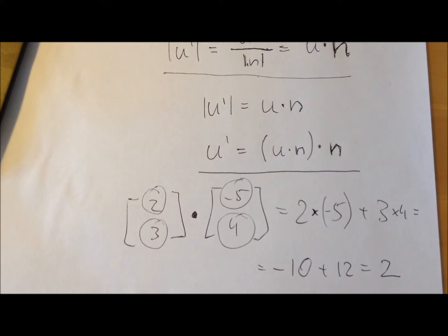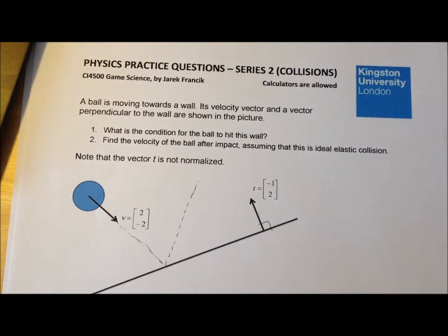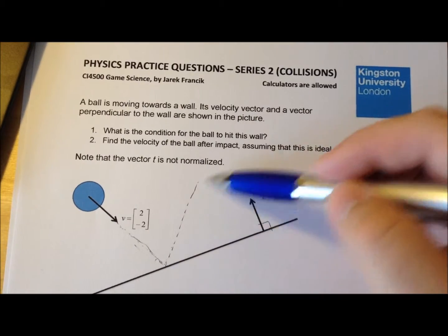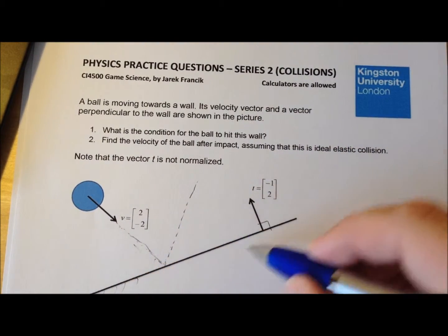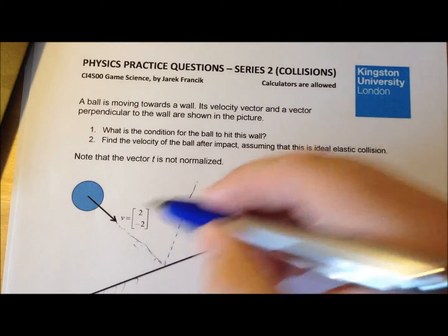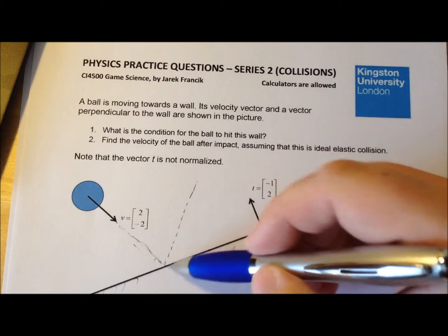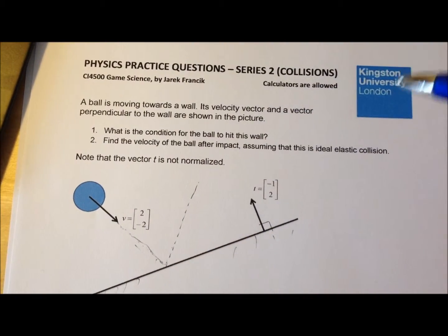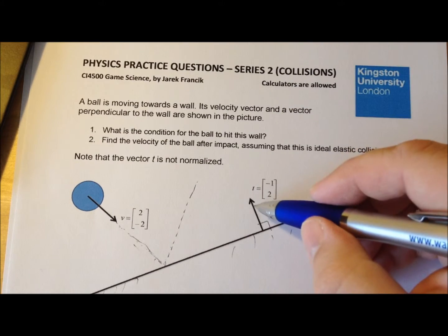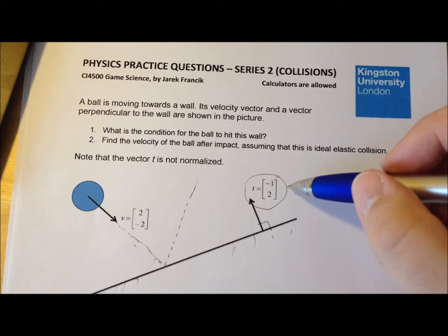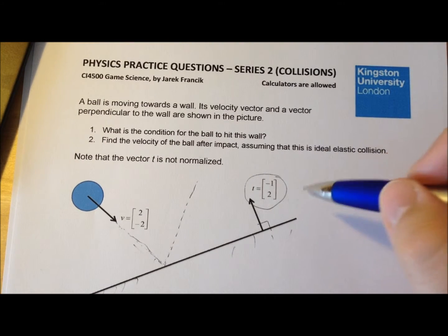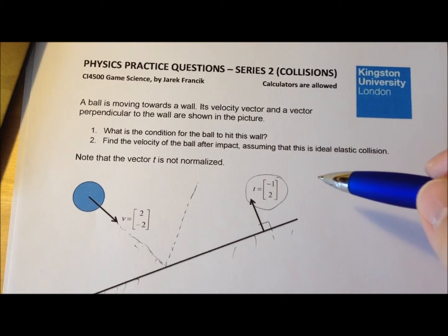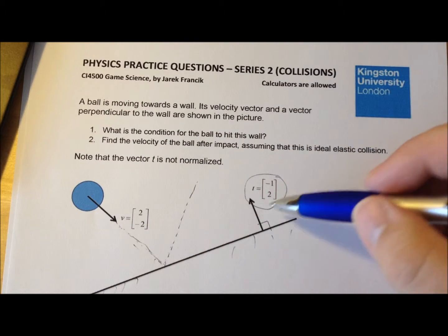Dot product is very powerful because you can calculate the projection of a vector on a given direction in a very simple mathematical way using just multiplication and addition — no trigonometric functions. Now let's get back to our exercise about the ball bouncing off the wall. We have the velocity vector and a vector perpendicular to the wall, which is not normalized. So the first thing we should do is normalize this vector.